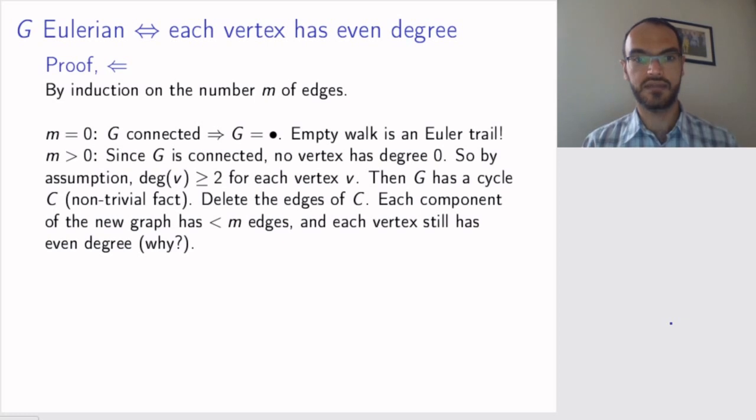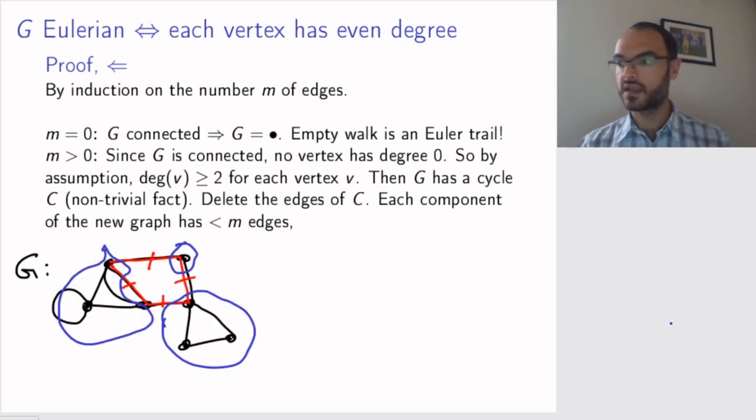So, in my example, maybe I would start here, then I go this edge, then I follow the Euler trail here, then I go this edge, now I come to this component, I follow an Euler trail here, then I continue and go back to my original cycle, my original vertex, and now I have completed the Euler trail.